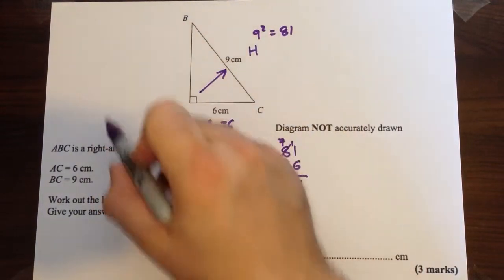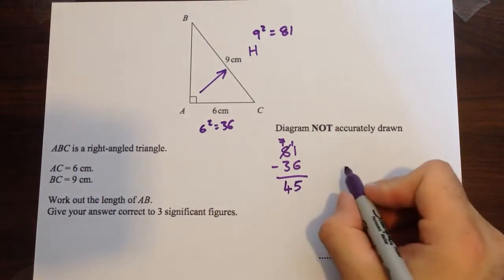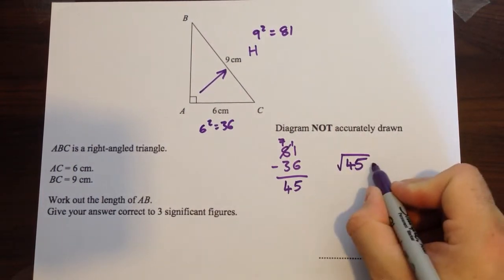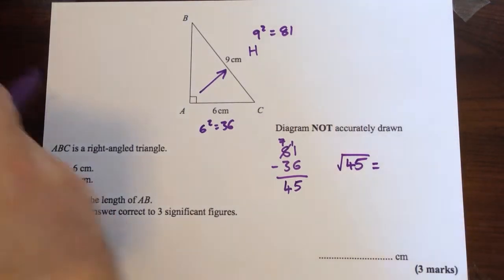So, that would be the area of the square on this side, we just want the side length, so we need to do square root of 45, and see what that gets us.